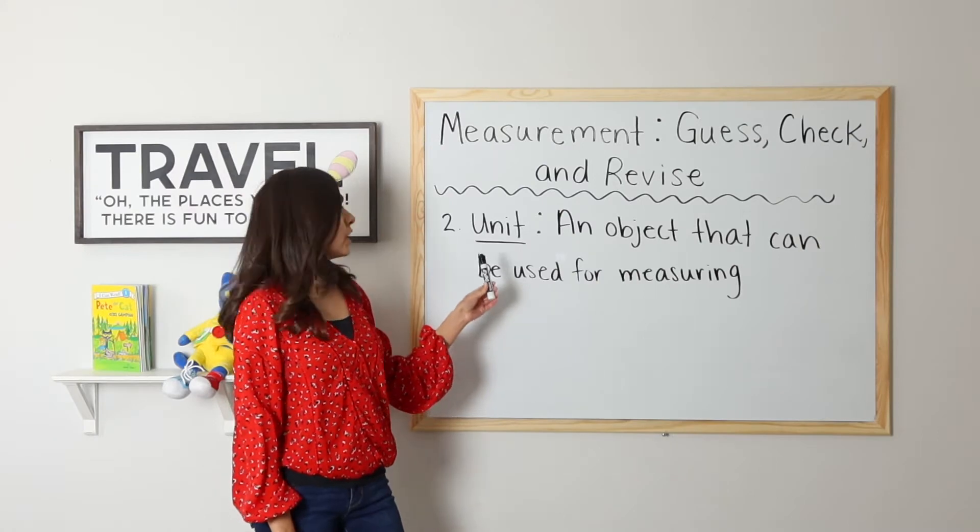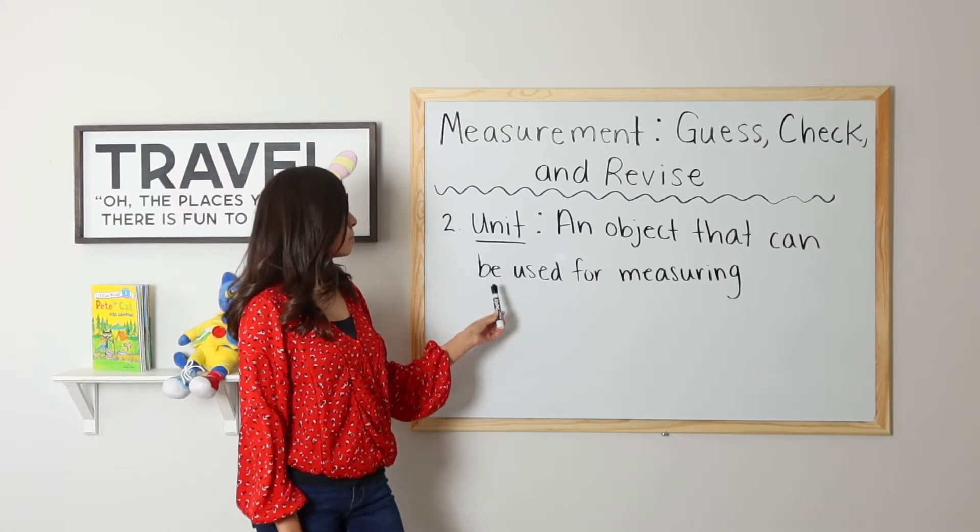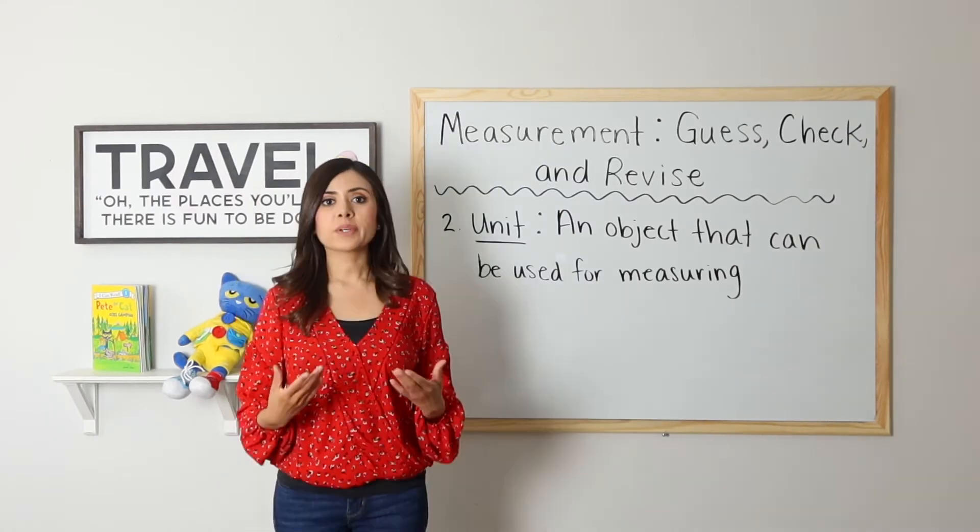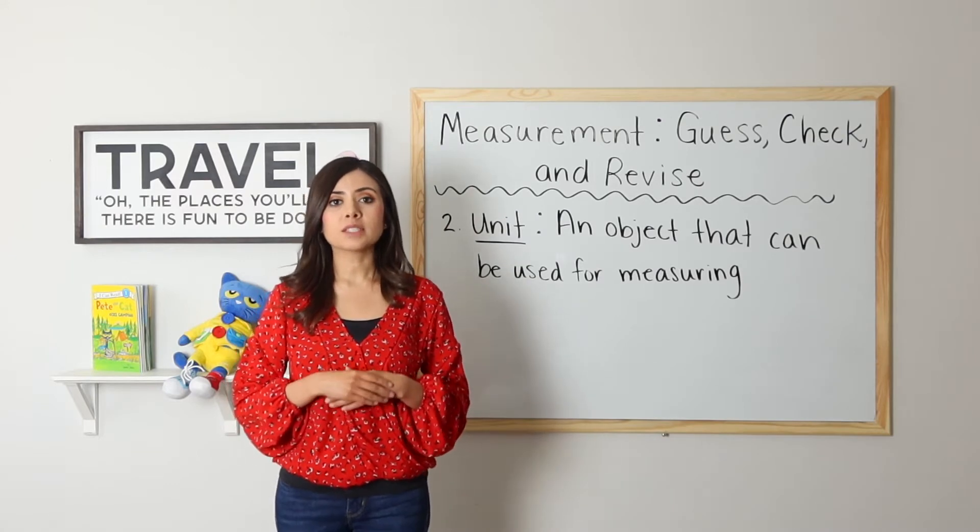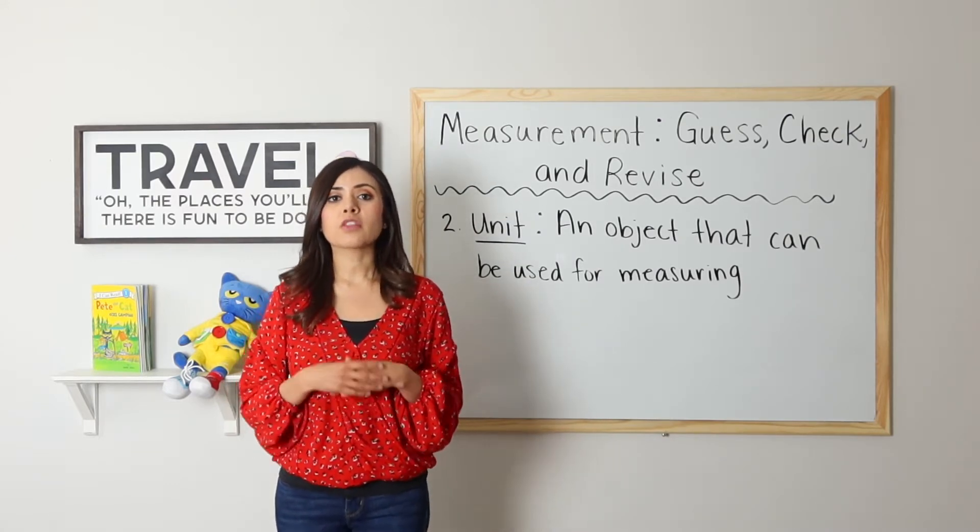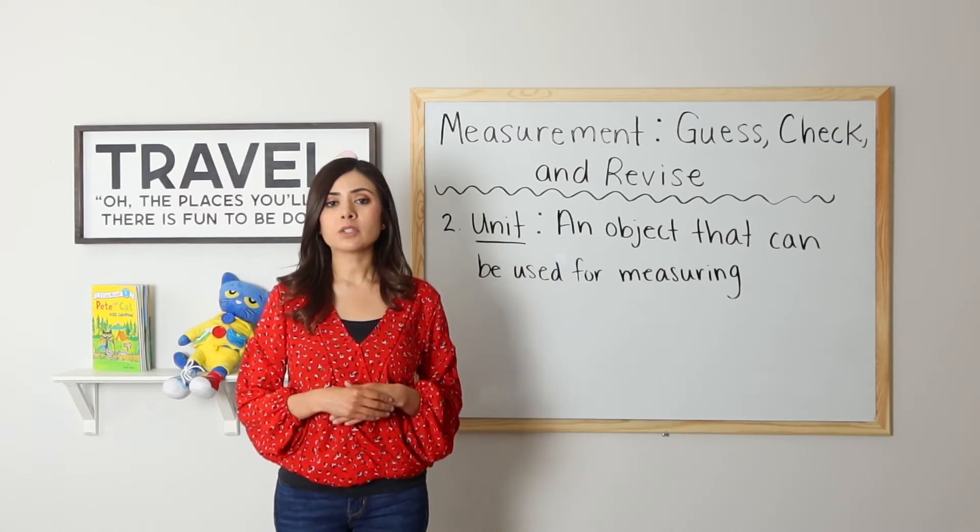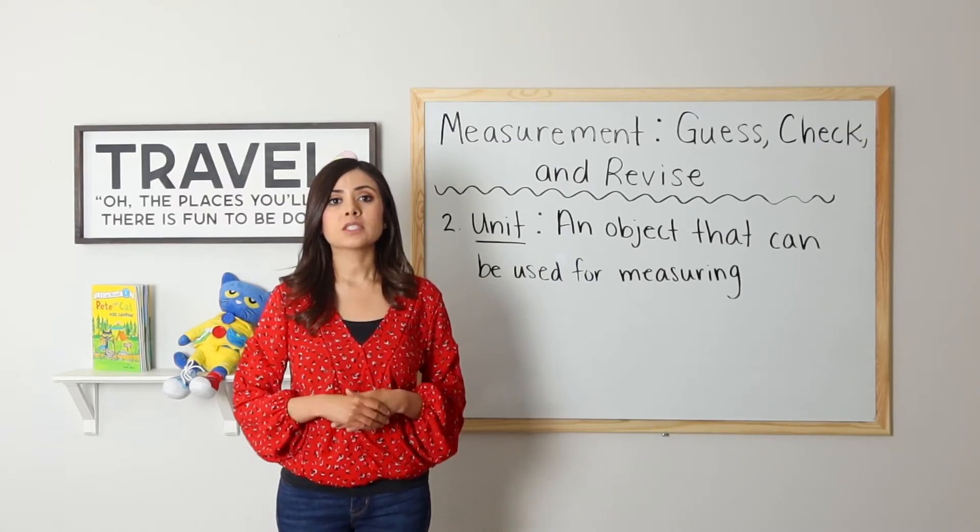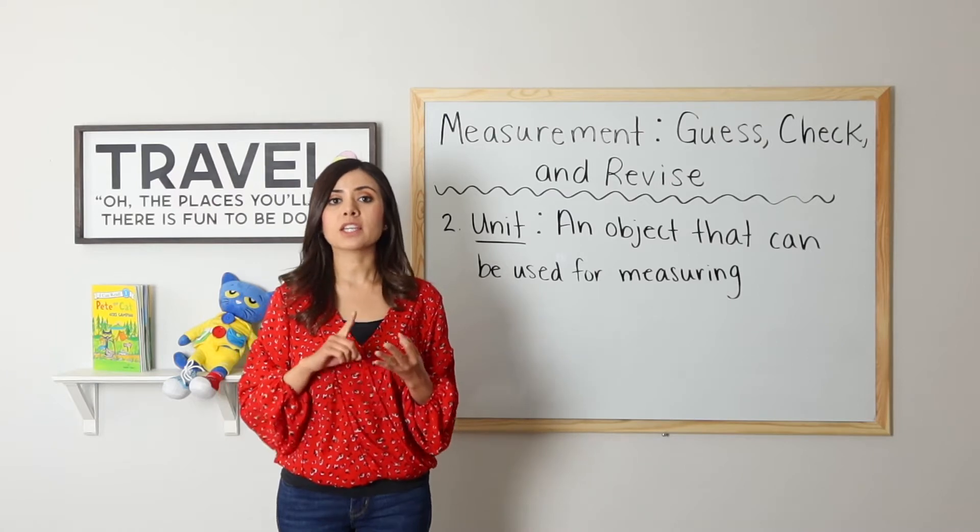Number two, unit. A unit is an object that can be used for measuring. Non-standard units of measurement are those units that are not normally used to measure objects, such as pennies, paperclips, and cubes.